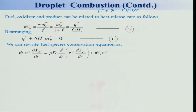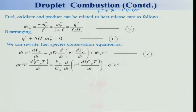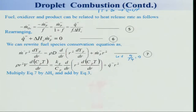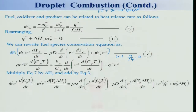Applying the Schwab-Zeldovich transformation and Lewis number = 1 (so D = α), we get a conserved variable equation: m-dot r² dB/dr = ρα d/dr(r² dB/dr), where B = (C_p T + Y_f ΔS_c) / q_B. This is a linear ODE. Similarly, conserved variables can be defined for oxidizer and for fuel-oxidizer combinations. The equation holds throughout the gas phase in both the inner and outer flame regions.